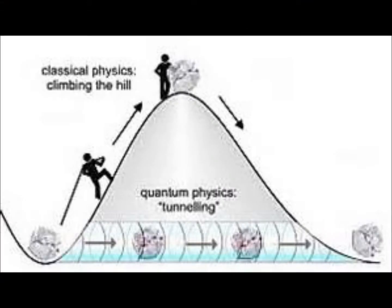In quantum mechanics, particles can, with a very small probability, tunnel to the other side of a barrier without actually passing through it. A representation of this is many objects hitting a hill.